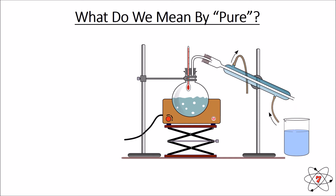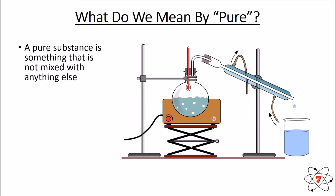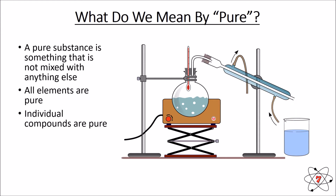Here we have some equipment used for a process called distillation. Distillation is a method of obtaining pure liquids, and we'll look at how it works in later lessons. A pure substance, as we've already said, is something that's not mixed with anything else — all elements are pure, and individual compounds are pure.